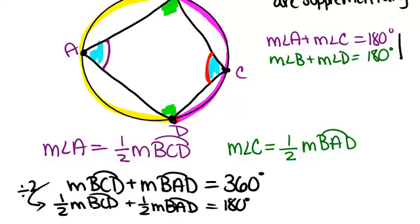And this exactly is what we were talking about here. If we sort of combine all three of these highlighted equations, we'll end up with the measure of angle A plus the measure of angle C equals 180. All you have to do is some substitution.